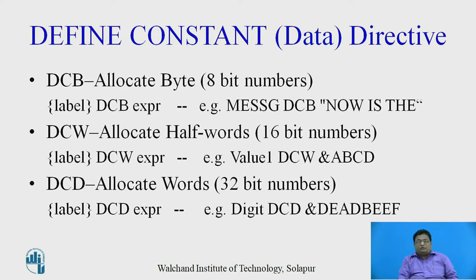The define constant directives are: the first one is DCB, which is used to define a constant of 8-bit value. The DCB directive allocates a byte of memory space for that particular data. The general syntax is: label, DCB, expression. The example shown is MESSG DCB "now is the". This string will be placed in memory with starting address MESSG, and each character from the string will allocate an 8-bit memory space.